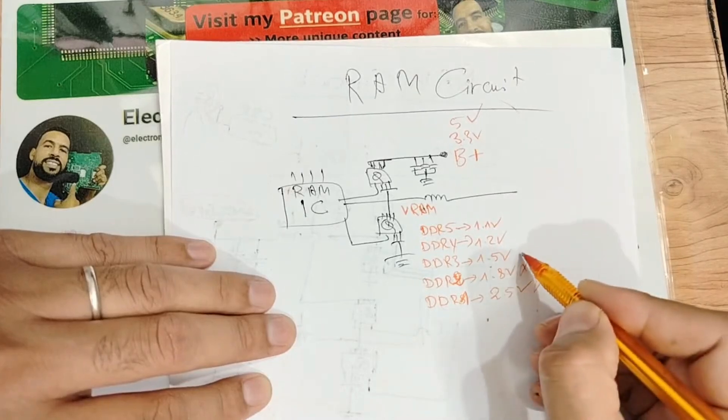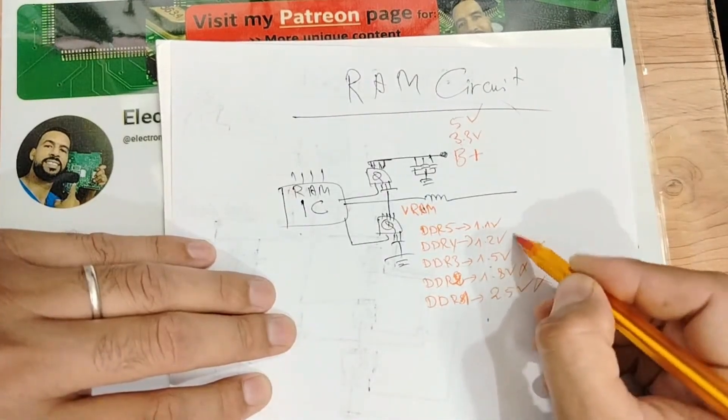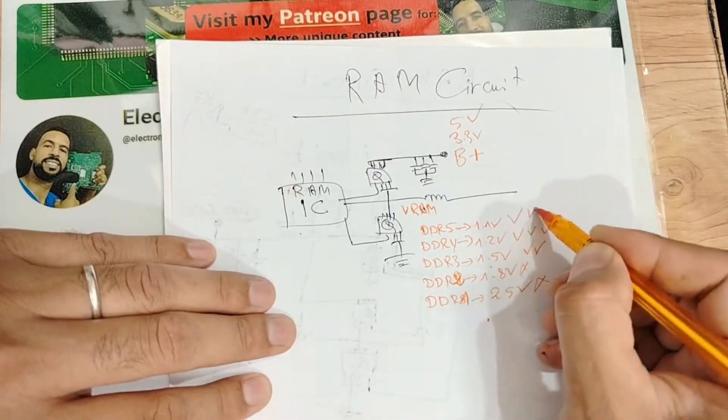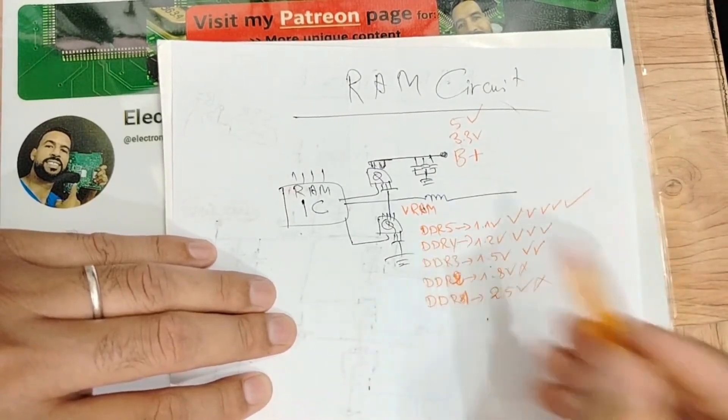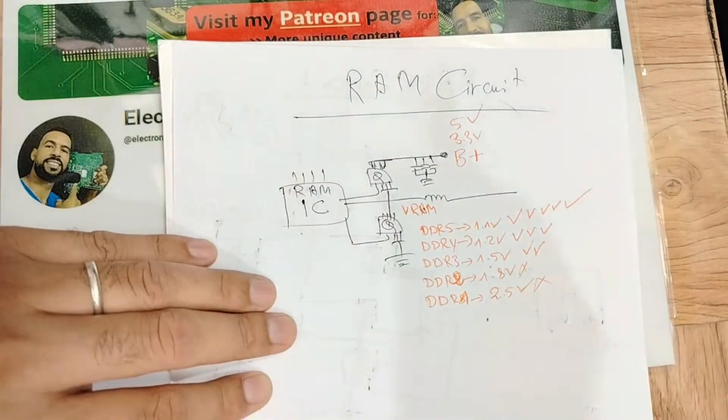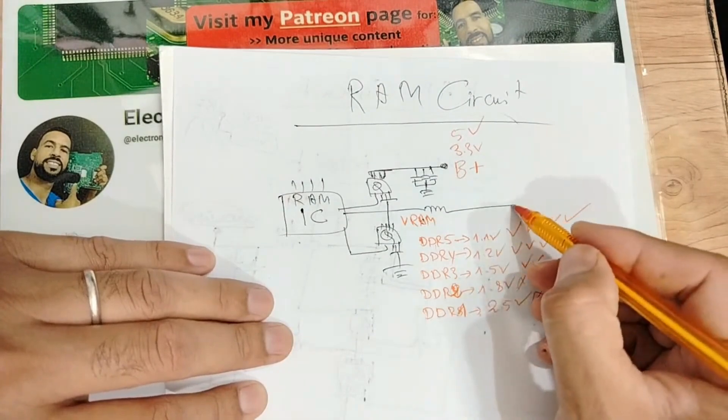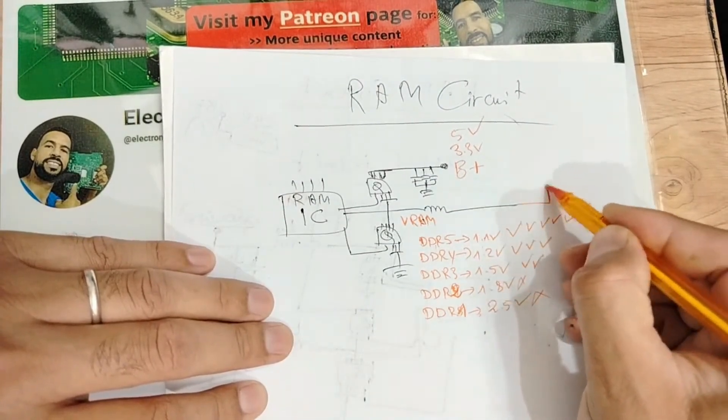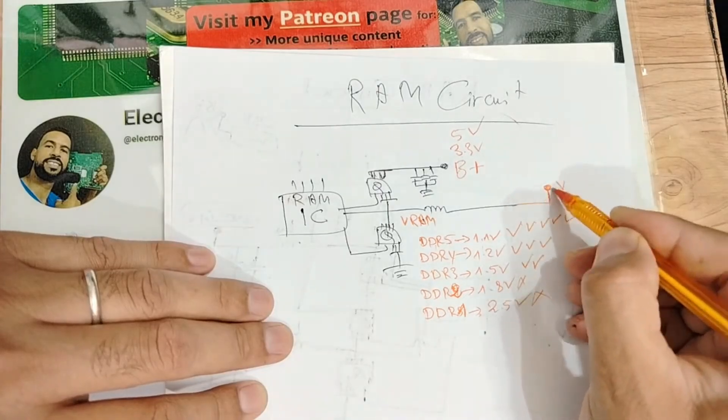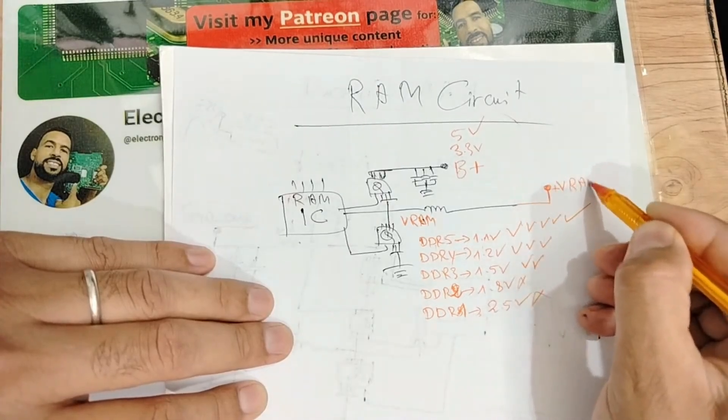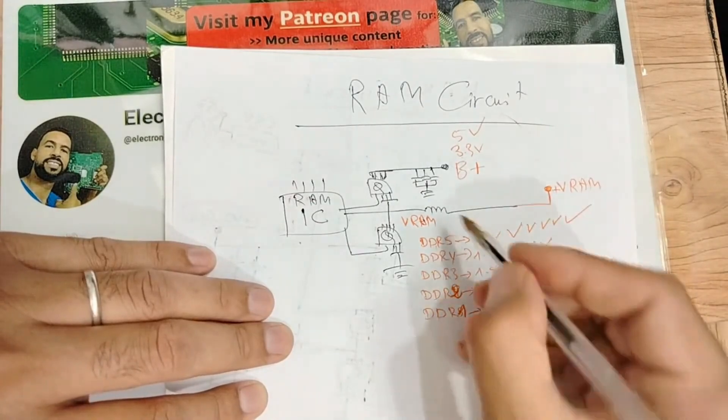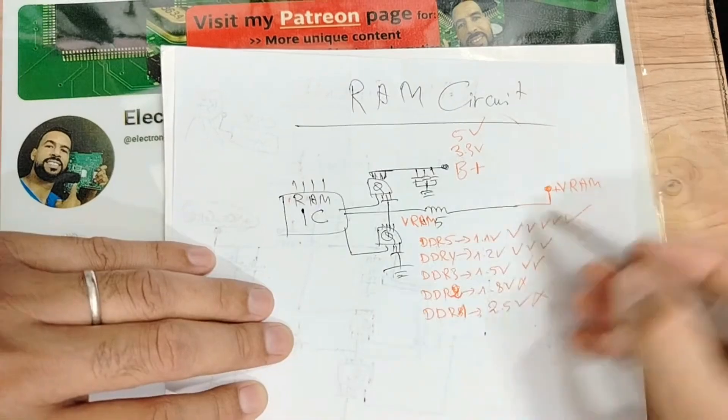And let's see: DDR5, DDR4, DDR3, DDR2, and DDR1 2.5 volts - not used, not used, used a little bit, used. This is the used one, DDR5. So here depending on type of the RAM, we will get here plus VRAM.